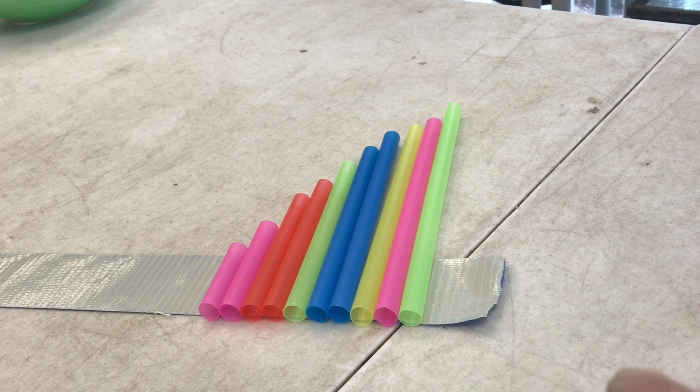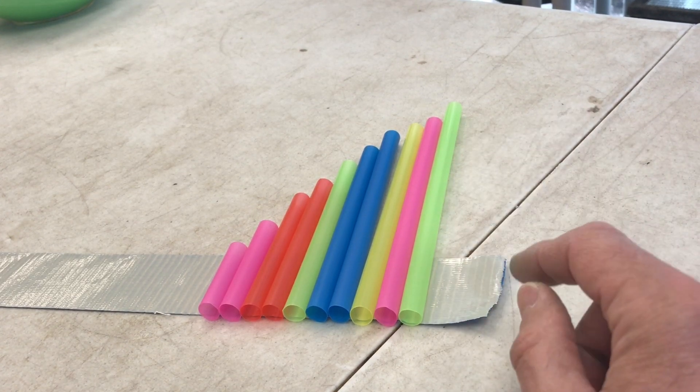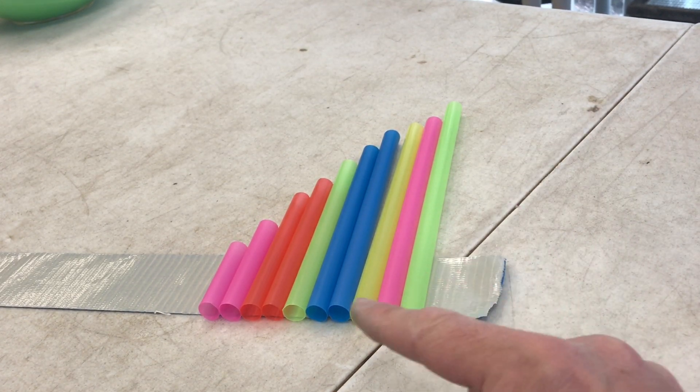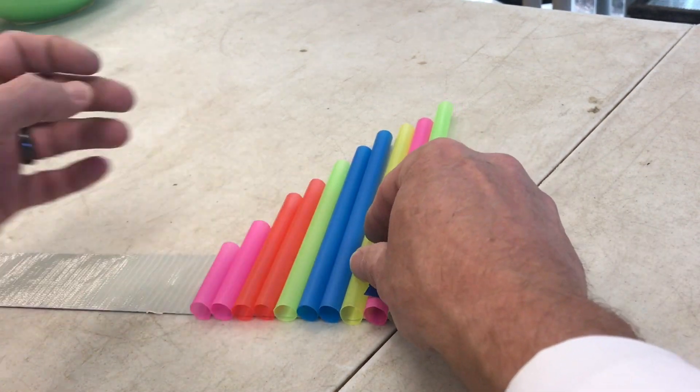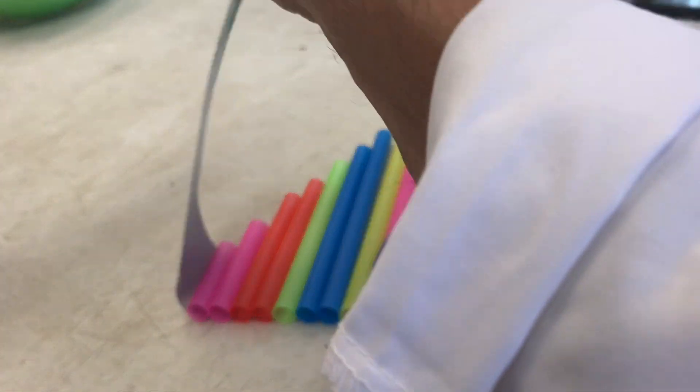So I laid out a piece of tape and, keeping my straws staggered by length from tallest to shortest, I've stuck the end of them here to the tape. Now I'm just going to hold them all together.